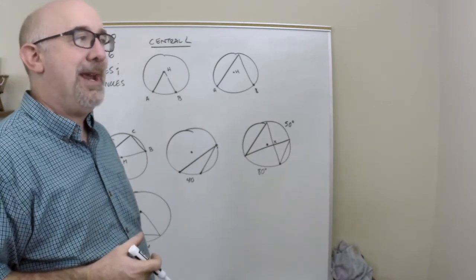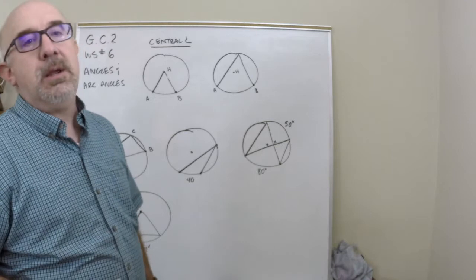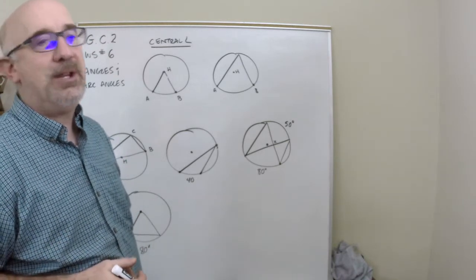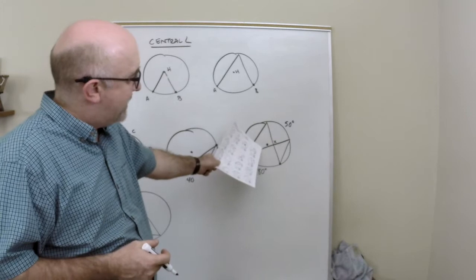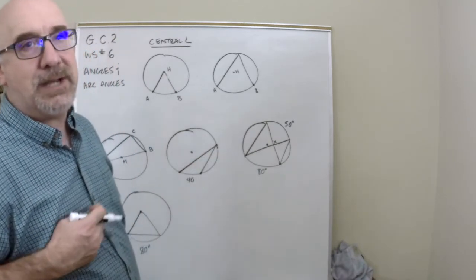It often comes with the name—it'll say in circle H so you know H is the center. You can assume it's the center. They will let you know when it doesn't go through the center. They'll let you know when it is or isn't the center. It'll be obvious.